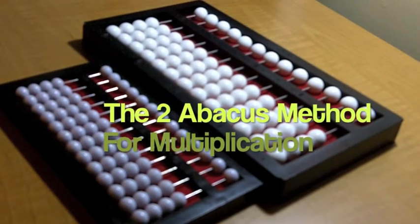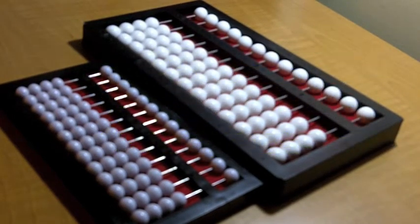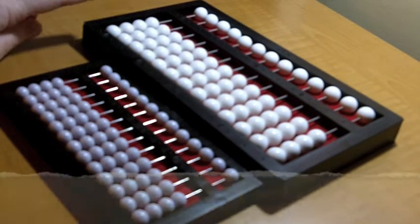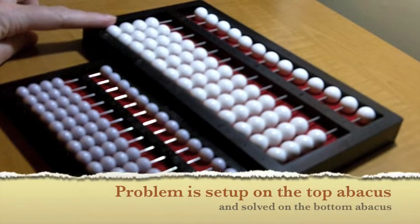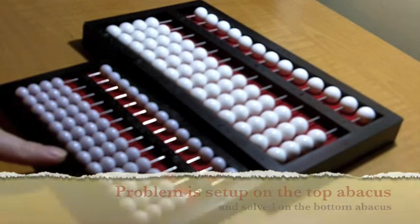This is called the 2 abacus method for multiplication. For this method, the problem is set on the top abacus and is solved on the bottom abacus.